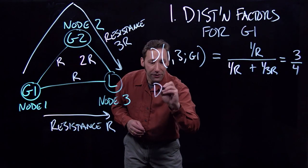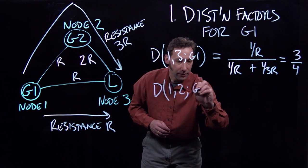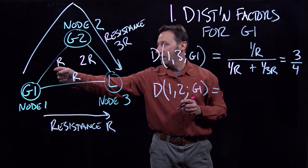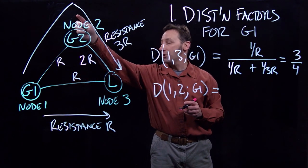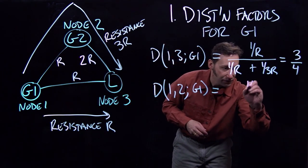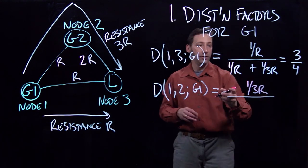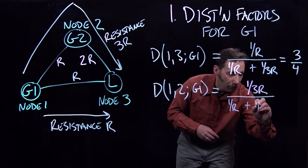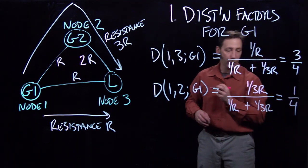Now we're going to calculate the distribution factor on line 1 to 2 from G1. The numerator is going to be the inverse of the total resistance of the long path that goes from node 1 to node 2 to node 3, which is 3R — so the inverse of that is 1 over 3R. In the denominator, we have 1 over R plus 1 over 3R, and we're going to get 1 fourth.